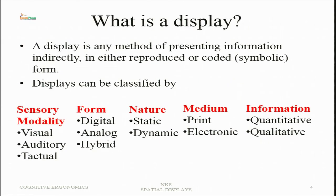What is a display? A display is a method of presenting information indirectly, because direct information from a system may not be achievable — it may be hazardous to get near the system, or many processes may be going on. Presenting all information in one place is always advantageous for quick processing. This information can be reproduced in a coded form, such as symbols, which have specific meanings in a specific context.